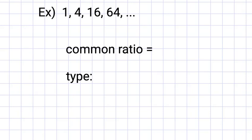This sequence has a different type of pattern. Here we are multiplying by 4 each time to get the next number. Since we are multiplying by 4 each time, we say that the common ratio is 4. When we are multiplying or dividing by the same number to get the next number, we call it a geometric sequence.